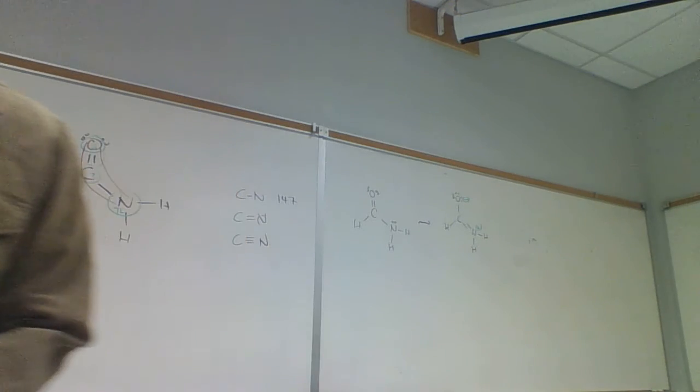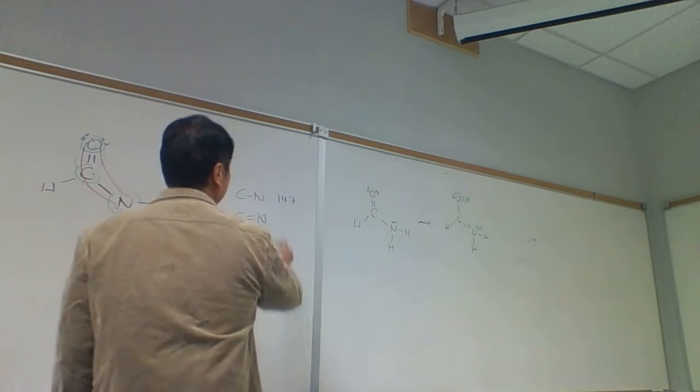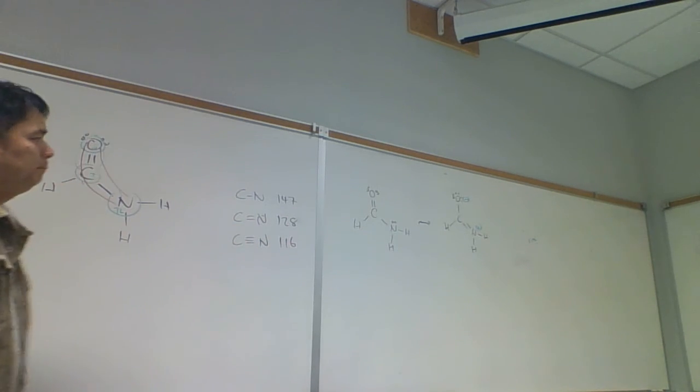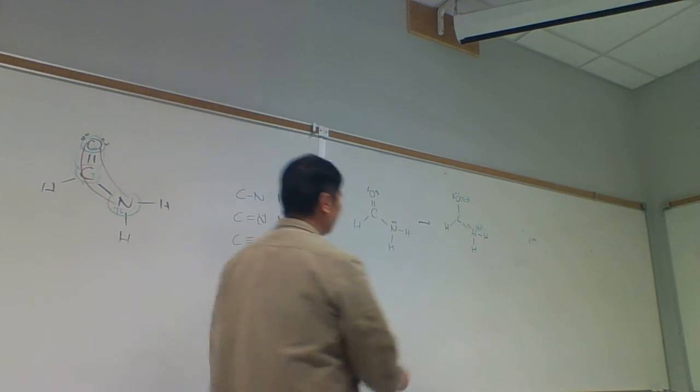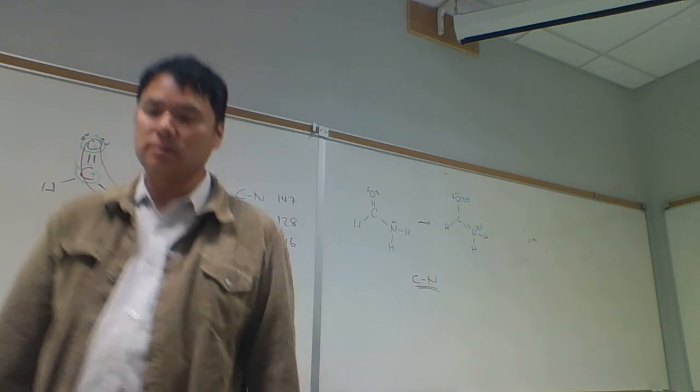And so, a double bond, the average bond length is 128 and 116. All right. We can measure the bond length in this molecule. And so, the carbon-nitrogen bond length in this molecule is...